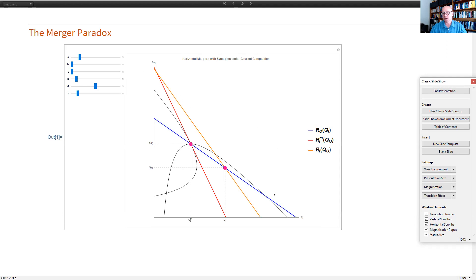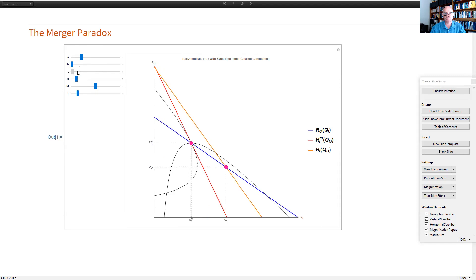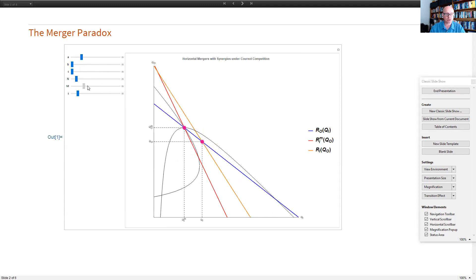And what this allows me to do is allows me to basically compare the profits before and after the merger for insider firms and for outsider firms as a function of a number of different things that we can see up here in the panel. So, A and B are basically the intercept and slope of the linear demand function. So, we could change those and see how that changes the diagram. We can also change the marginal costs of the firms before the merger happens. We can change the number of firms in the industry. So, that's N. So, we can change that as we wish. And we can also change the number of firms that become insiders, that is, the number of firms that decide to participate in the merger itself. So, that we can change at will here.